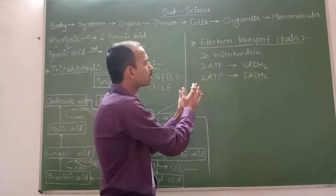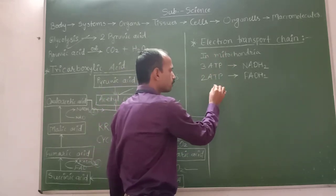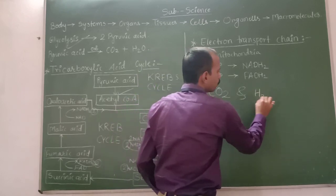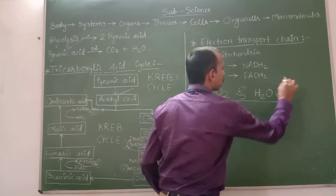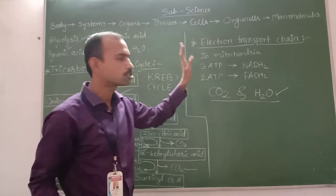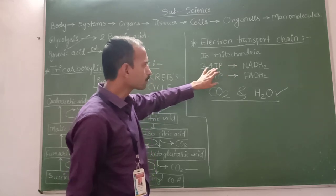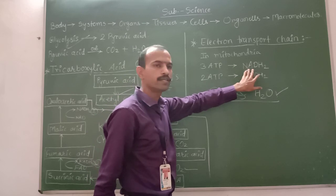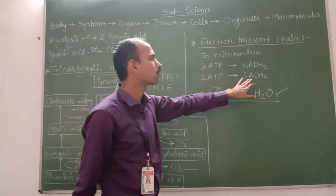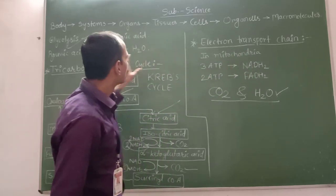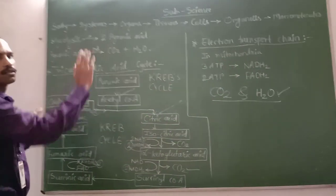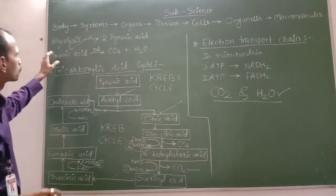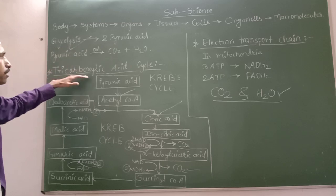In the electron transport chain, only the transfer of electrons takes place. Due to this transfer, carbon dioxide and water are produced. In this process, three molecules of ATP are generated from each NADH₂, and two molecules of ATP are generated from each FADH₂.